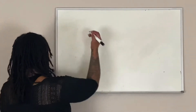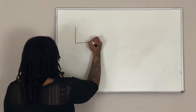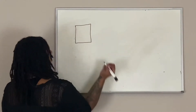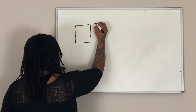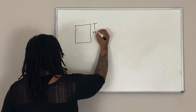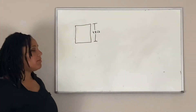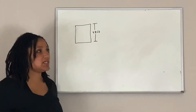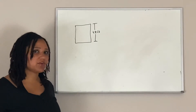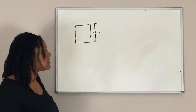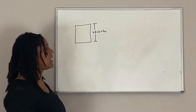Let's say I give you a situation where you have a building, and the building is 48 feet tall. We're going to give that location a name — we'll call the height of the building H naught, or H sub zero.